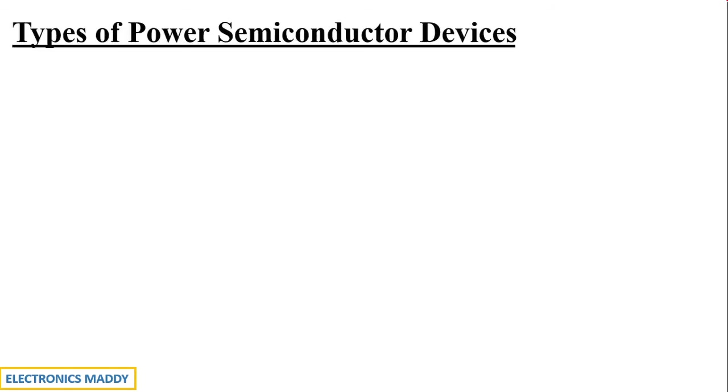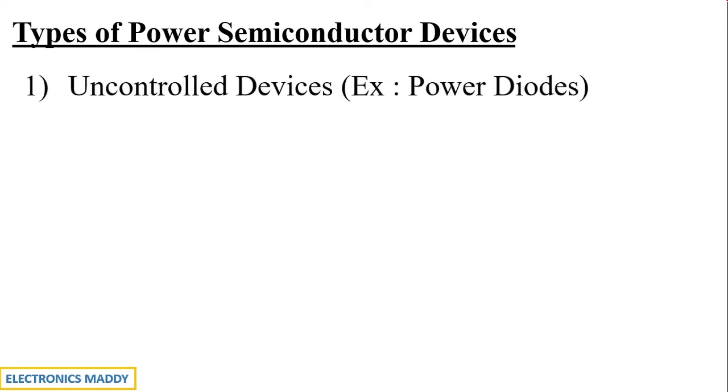Power semiconductor devices are primarily classified by the nature in which they are controlled. Having said that, the first classification is uncontrolled devices and an example to it is power diodes.